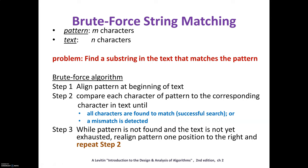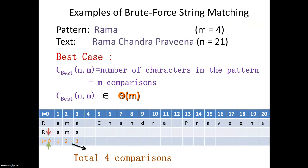The first example has a text with 21 characters — 'ramachandra praveena' — and the pattern 'rama' with four characters. The text is aligned with the pattern and the first character of the pattern is compared with the first character of the text. All four characters match, so four comparisons are made total. In general, if there are m characters in the pattern, the number of comparisons in the best case is m, so it belongs to θ(m).